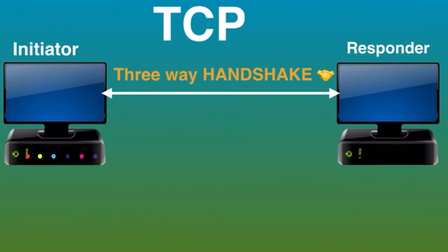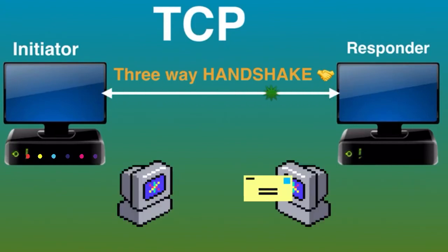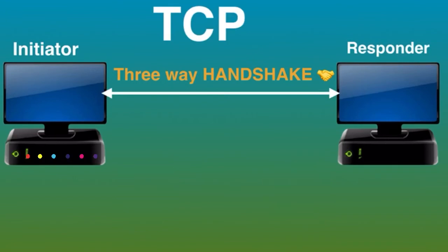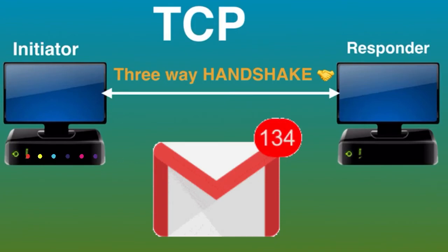Let me simplify with an example. When an email is sent from an email server, the TCP layer divides the message into multiple packets, gives them a number, and then forwards them to the IP layer for transport. At the IP layer, each packet will be transported to the destination email server. While each packet is going to the same place, the route they take to get there may be different. When a packet arrives, the IP layer hands it back to the TCP layer, which reassembles the packets into the message and hands it to the email application where it shows up in the inbox.